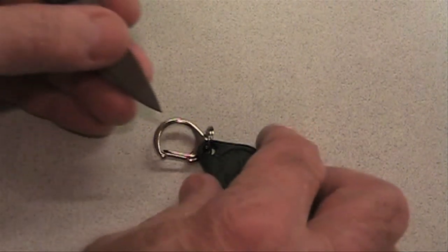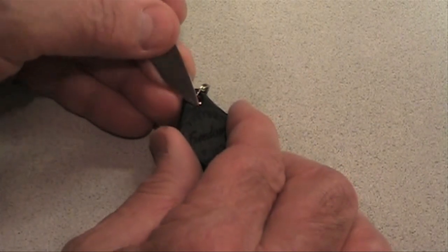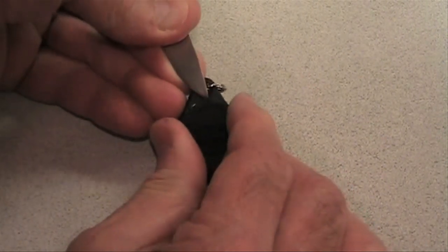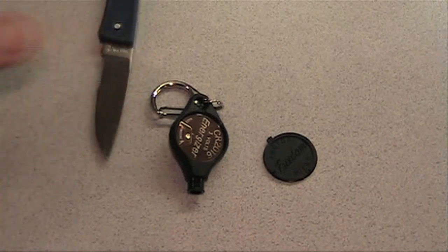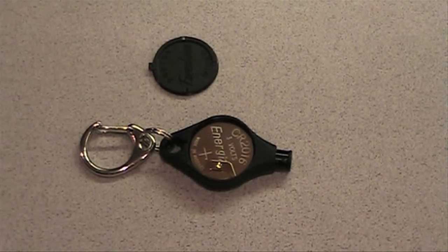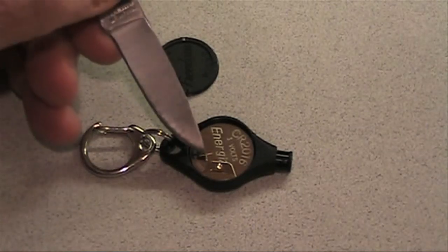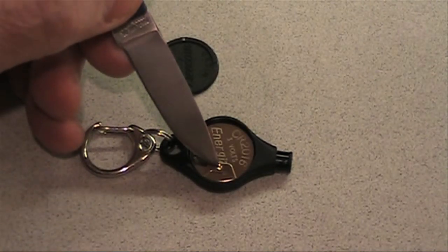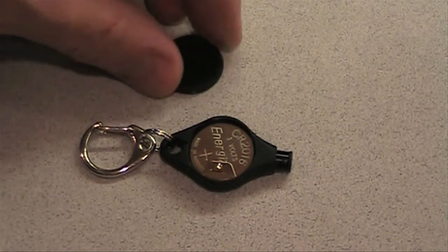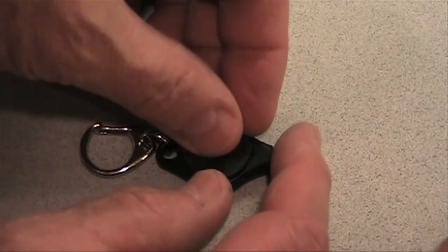Using a small pointed object, remove the case on the logo side of the light. There is a tiny tab near the keychain hole, directly above the word Photon. Replace with two CR-2016 lithium batteries. Install with the plus side up or toward the cap. Be sure the batteries are under the gold tab. Snap the cap back into place.